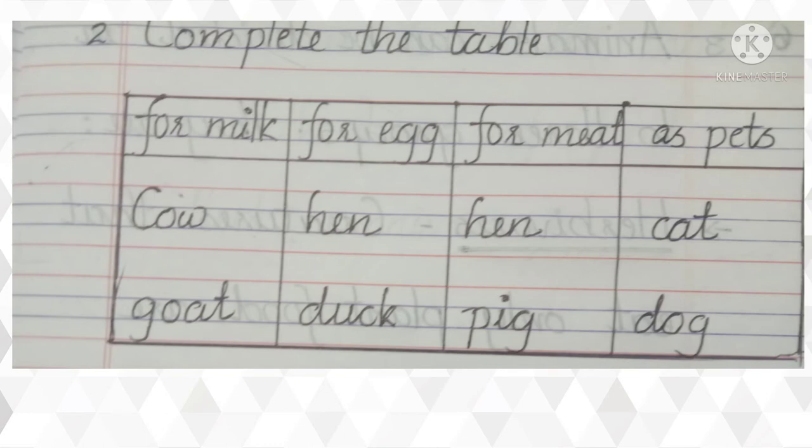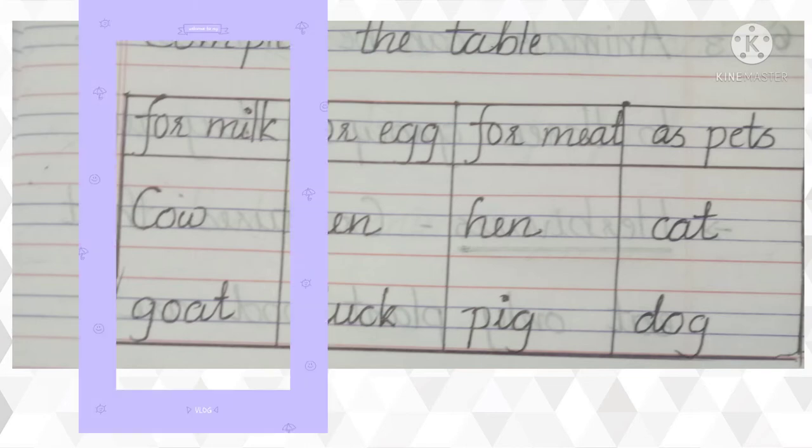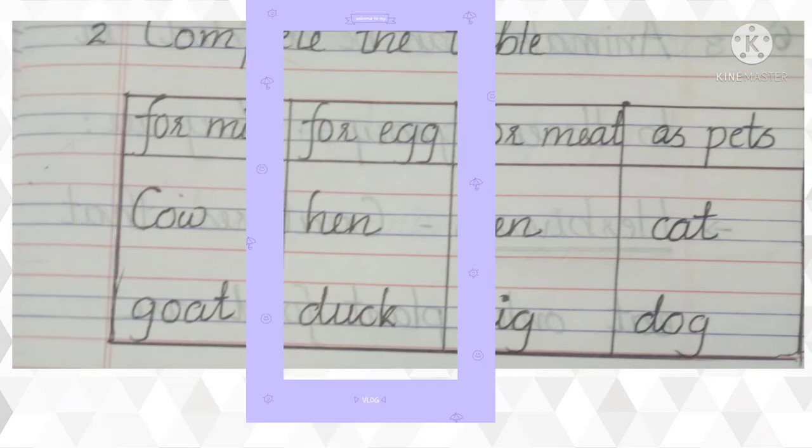Children, look at this table. Find out the names of the creatures that we feed and keep in our homes for particular needs. For milk, we use cow and goat. For eggs, we use hen and duck.